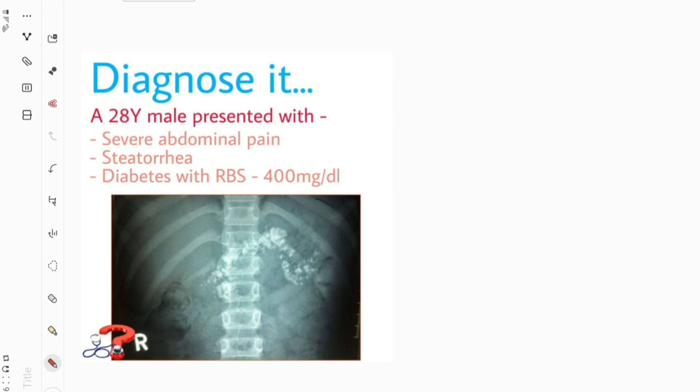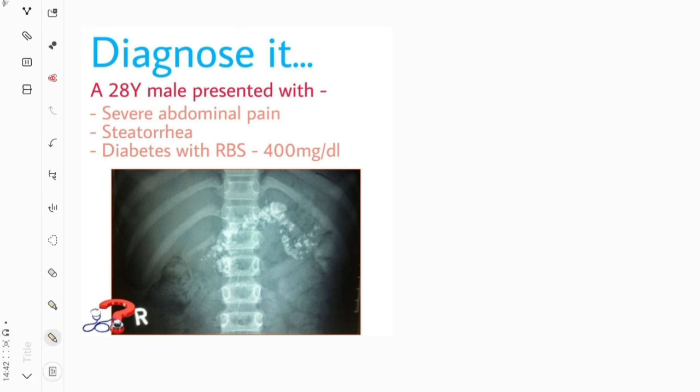He also complained of passing stool that was loose, quite foul smelling, greasy, and multiple times a day. On checking the random blood sugar, it was 400 mg/dL, and on checking the HbA1c level, it was 14%. We then did an ultrasound abdomen, which was inconclusive but showed some kind of pathology around the pancreas.